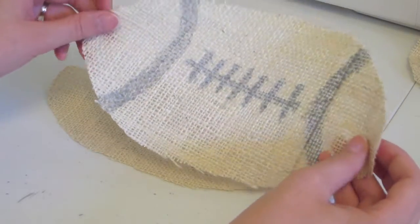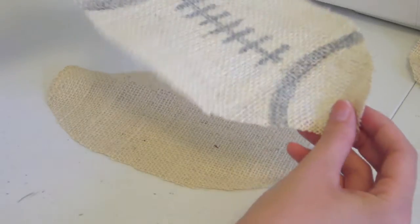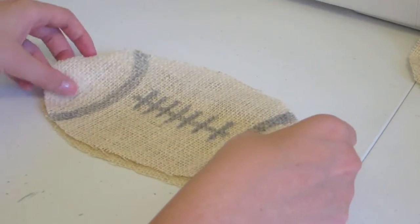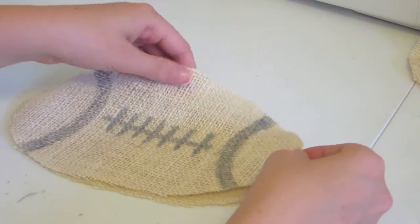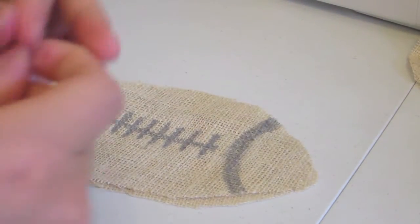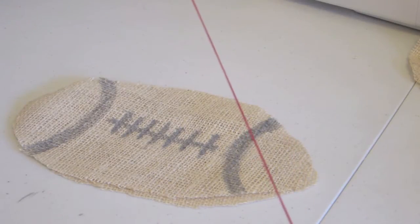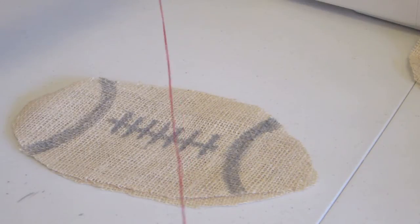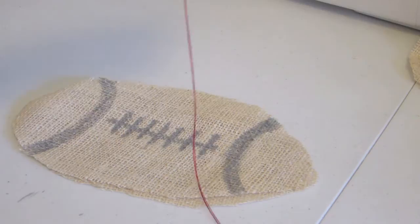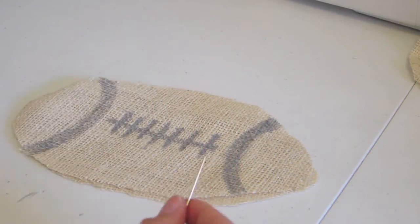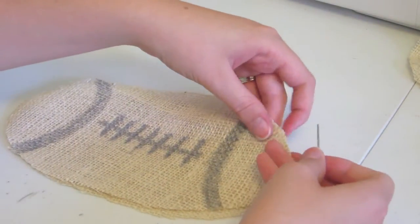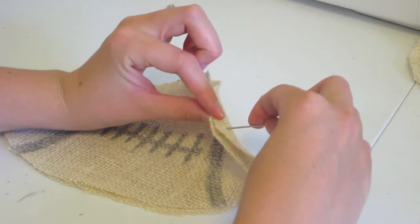Once I've drawn on all the footballs, I'm ready to stitch them together. I'll put my two pieces together - that would technically be wrong sides together, though I can't really tell on my burlap. I have my needle threaded with 4 threads so it makes a really distinct stitch. You can do as many as you'd like - you could do just one, but I feel like at least 2 will hold up really nicely. Then I'll go through the back and put a stitch.